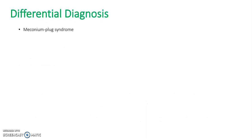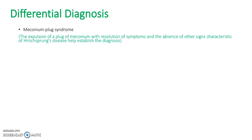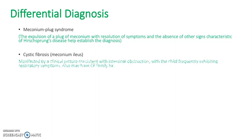On to differential diagnosis. Meconium plug syndrome — this will be resolved with an expulsion of a plug of meconium, so the symptoms will resolve on their own, and the absence of other signs characteristic of Hirschsprung's disease helps to establish this diagnosis. Cystic fibrosis — meconium ileus is manifested by the absence of CFTR channels due to cystic fibrosis, presenting with a clinical picture consistent with intestinal obstruction, with the child frequently exhibiting respiratory symptoms. They also may have a cystic fibrosis family history.